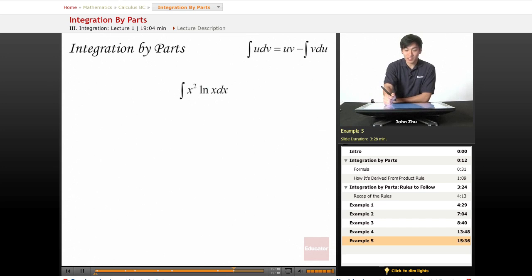For our last example of this section, we are just going to follow the same rules that we've been following for the past few examples. So this time, if we make u = x squared and dv = ln of x, let's see what happens.